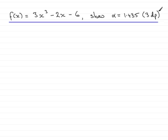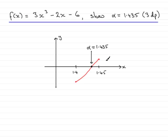So how are we going to do that? Well, first of all, let's bring back the graph that shows this root alpha. In the first part, we established that the root alpha was between 1.4 and 1.45, and now we've tracked it down to 1.435, which we think is correct to 3 decimal places.